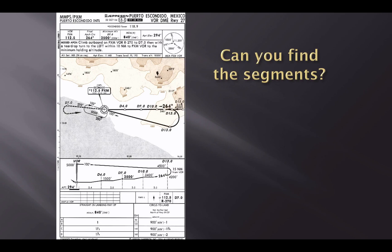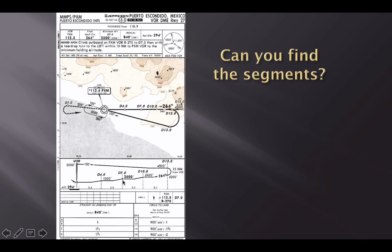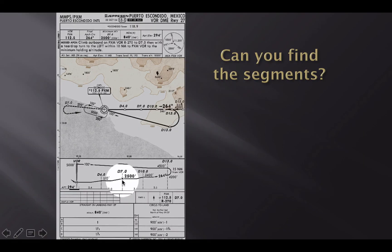Again, it's just helping me to get lower and lower and closer to my minimums. The final minimum, the MDA for this, will be right here, 840 MSL. Now, where does the final segment begin? Right at the Maltese cross here is the final approach fix. It doesn't say FAF, but the Maltese cross is the FAF and that begins the final segment.